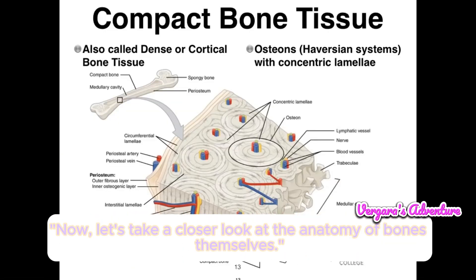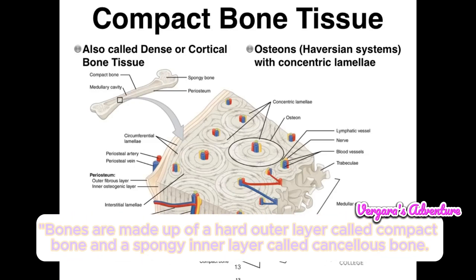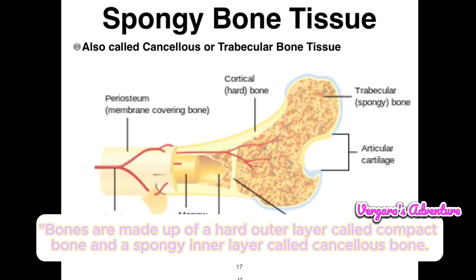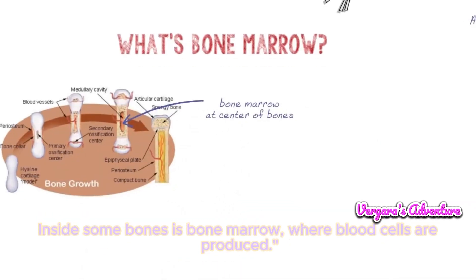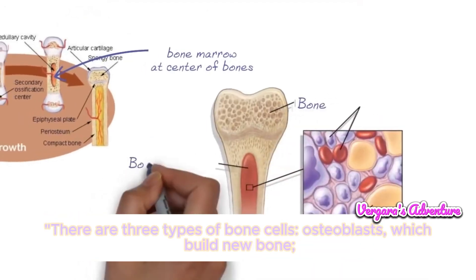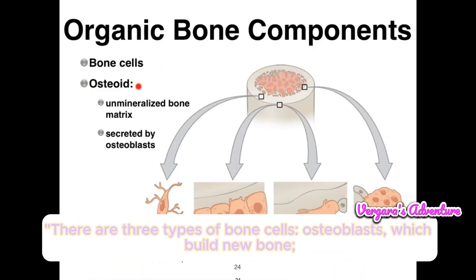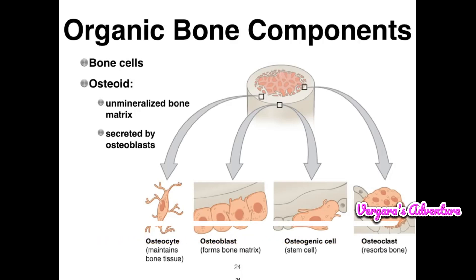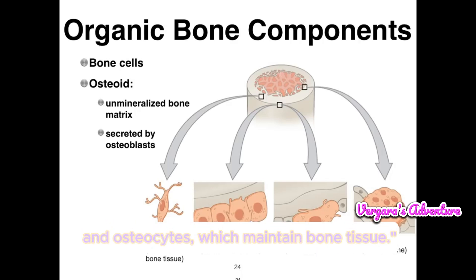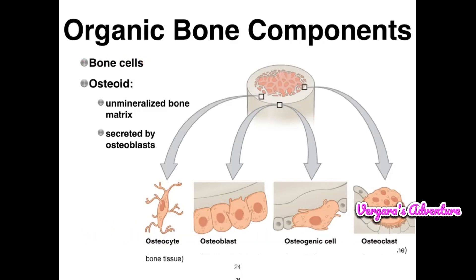Let's take a closer look at the anatomy of bones themselves. Bones are made up of a hard outer layer called compact bone and a spongy inner layer called cancellous bone. Inside some bones is bone marrow, where blood cells are produced. There are three types of bone cells: osteoblasts, which build new bone; osteoclasts, which break down old bone; and osteocytes, which maintain bone tissue.